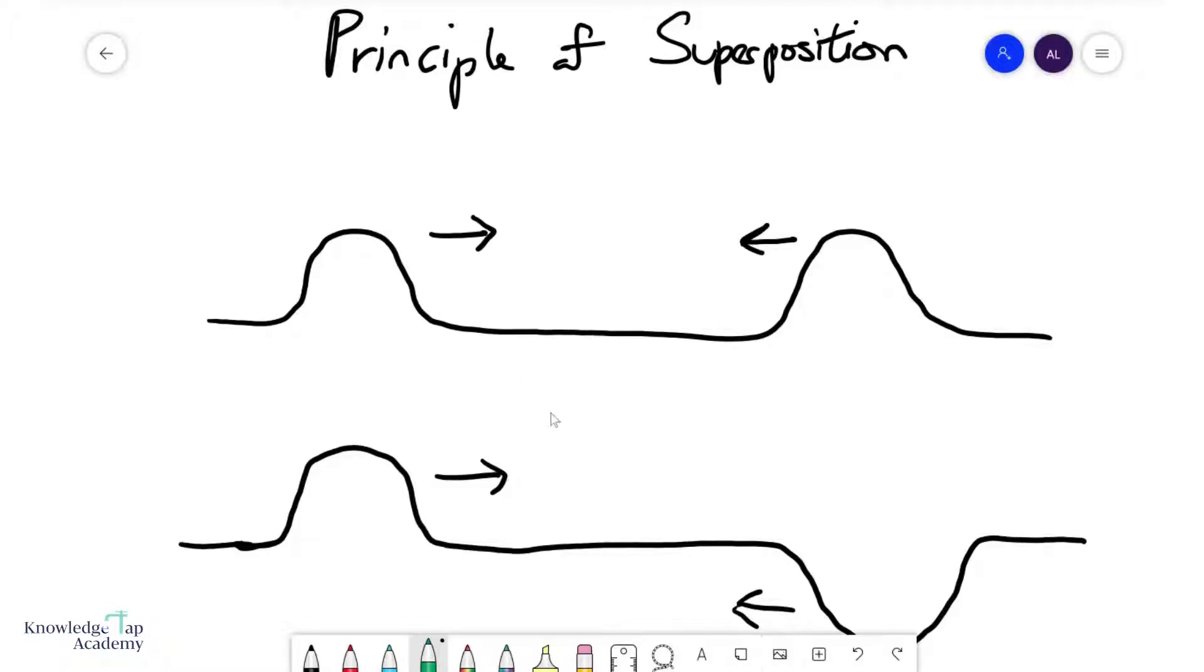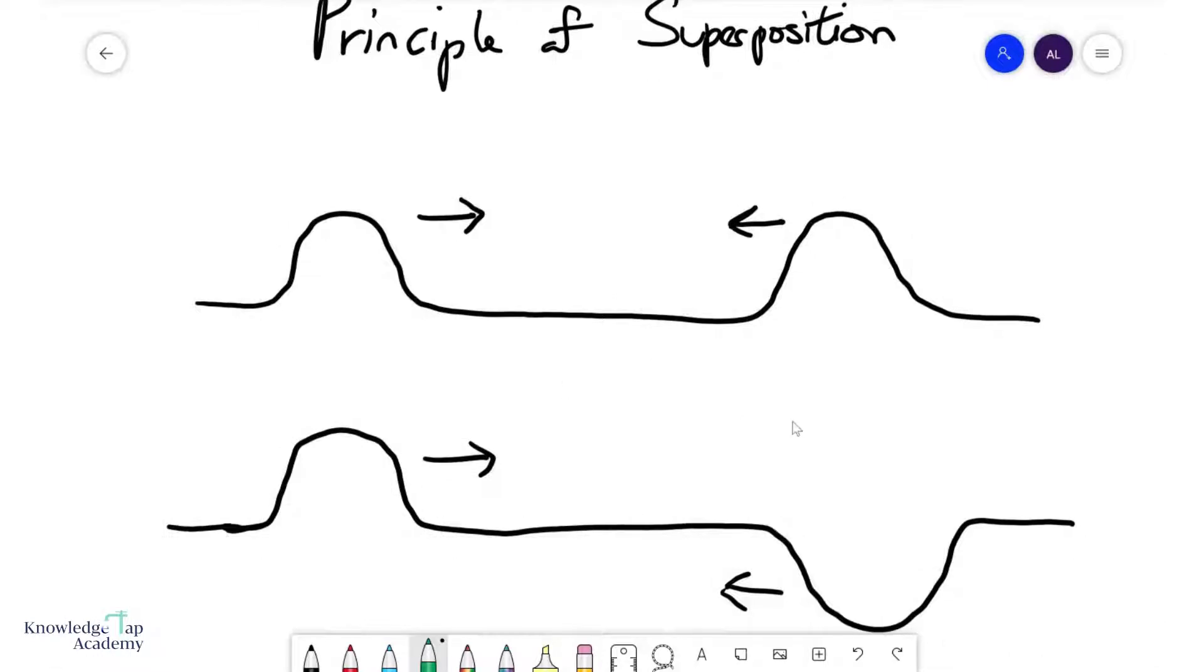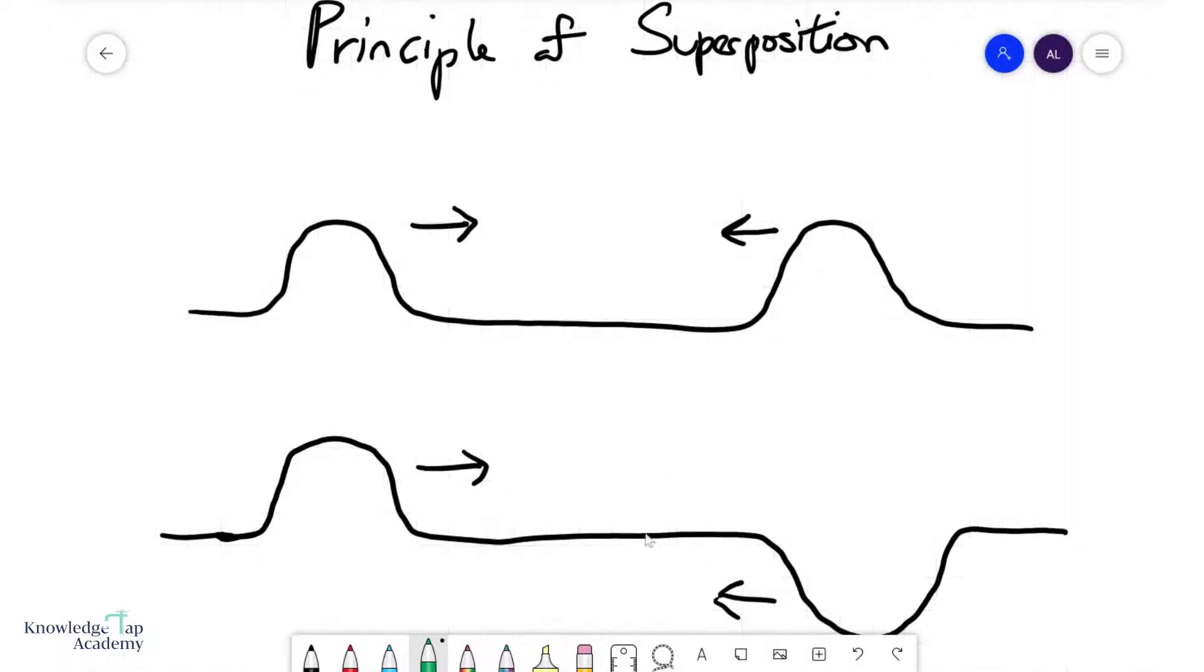All right, so let's talk about the principle of superposition. Now, basically, when you have more than one wave and they're coming together, the principle of superposition says that when these waves meet at a point, let's say over here, whatever displacement you get at this point will simply be the vector sum of the displacements of each of the waves that come in.